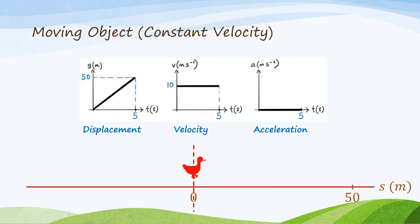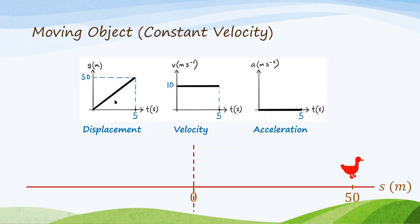For a moving object with constant velocity, the duck is moving to the right at constant velocity. It moved from the origin to the 50-meter location. So the displacement graph increases from zero to 50 meters, and the gradient is constant. The gradient of the displacement graph is actually the velocity, so velocity is constant. Velocity is 10 meters per second. Because the duck is moving at constant velocity, velocity is constant and horizontal on the graph. There is no acceleration — no speeding up or slowing down. Acceleration is zero.